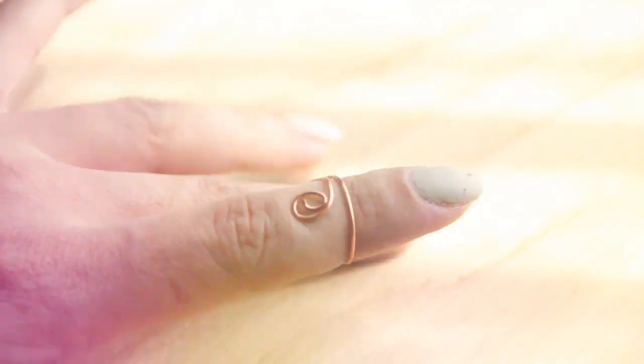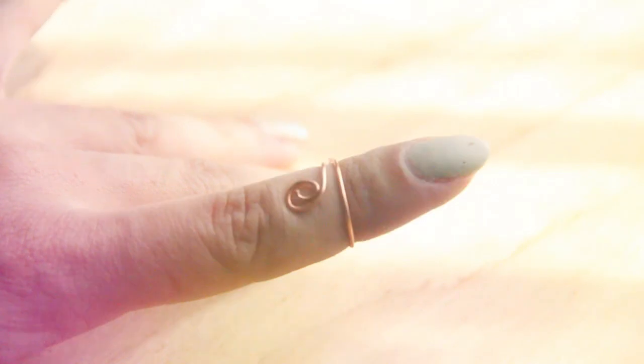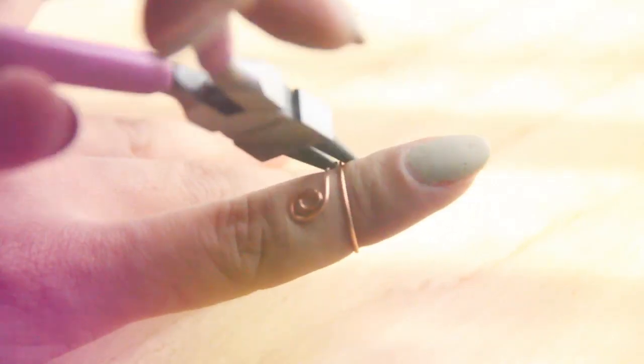Then with your round nose pliers, you're going to take the ends of the stem, create a loop, and start bending it inward. So once you're done with that, you should end up with a swirl effect. Then you can just repeat the process to the top stem.